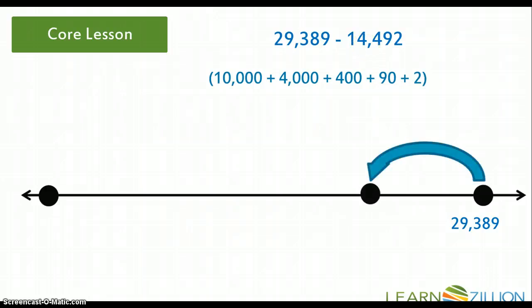Now it's going to be exactly the same thing you did with adding using an open number line as when you're subtracting using an open number line. So my beginning number is 29,389. And I am subtracting 10,000 from that number. And I'm left with the number 19,389.